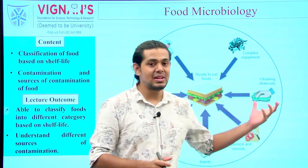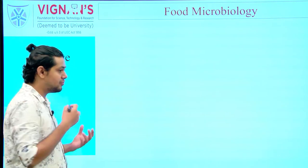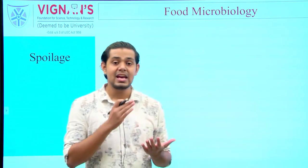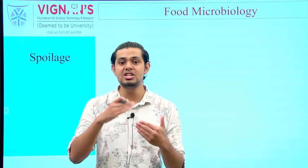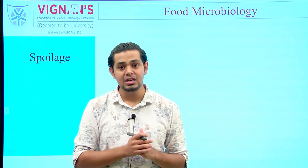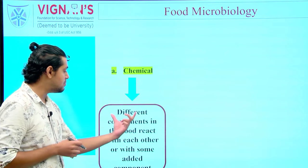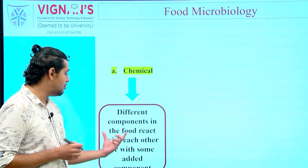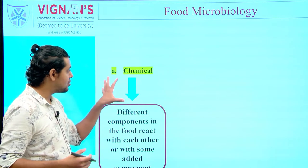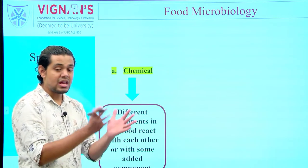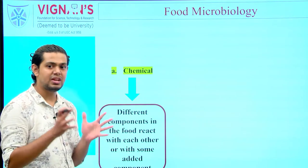By the end of this lecture, students will be able to classify any given food product based on its shelf life and will thoroughly understand the different possible sources of contamination. Food spoilage can be defined as any kind of physical, chemical, or biological changes which render a food product unfit for human consumption. Chemical spoilage means different components in food react with each other or with added products.